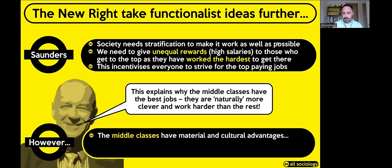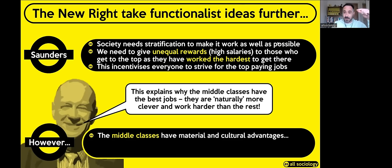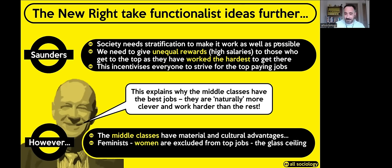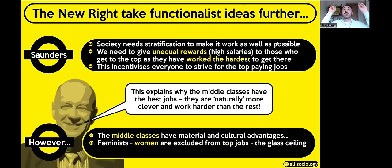There are lots of problems with this. Firstly, the middle classes are at the top partly because they have material and cultural advantages — money, encouragement, experiences. If we take the feminist argument, they'd say the idea that people who work hardest get to the top is rubbish because women are often excluded from top jobs in society. There's the concept of the glass ceiling — women can see the top jobs but cannot break through because men control those positions and won't let women get there.